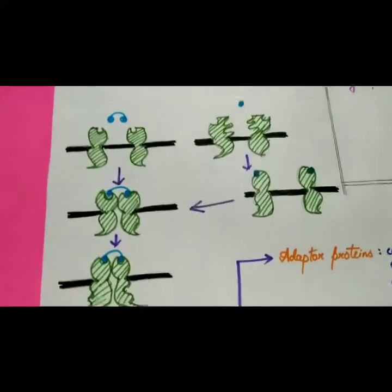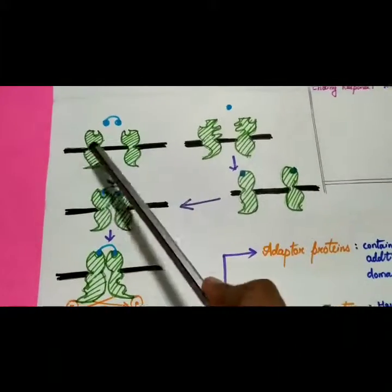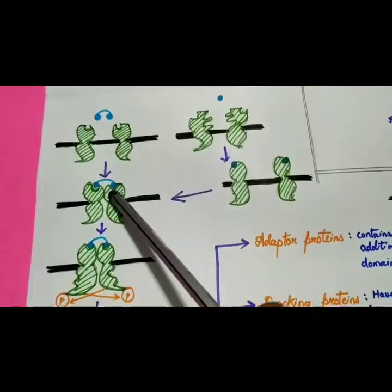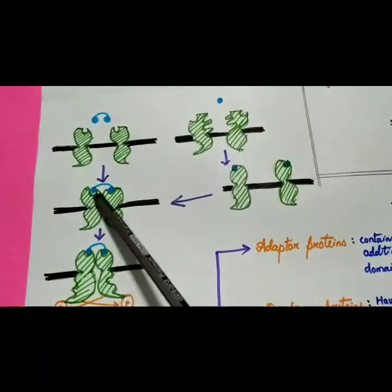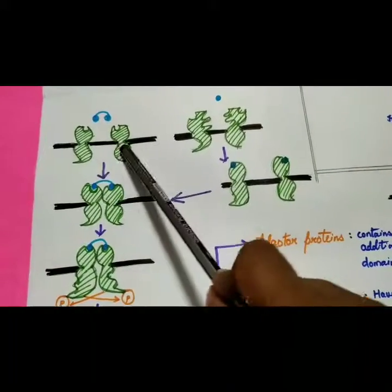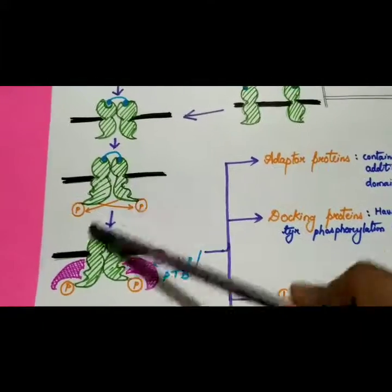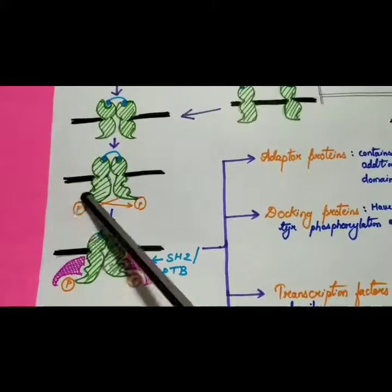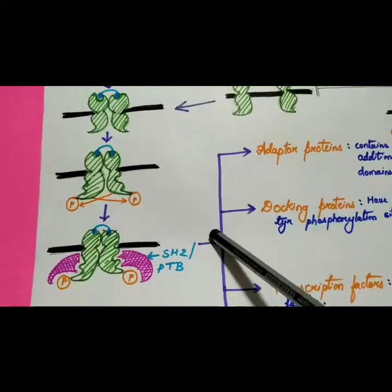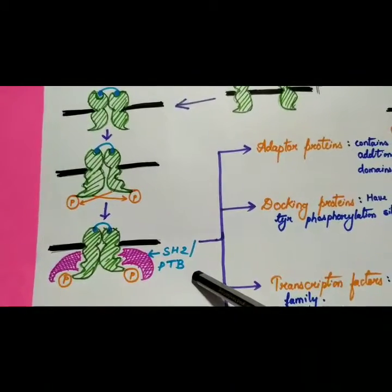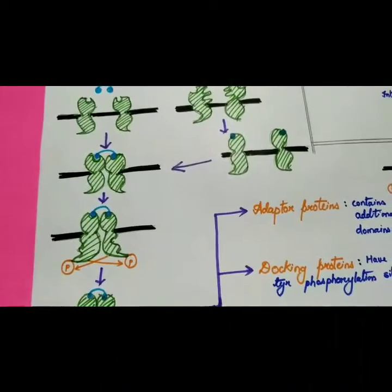Looking at the mechanism: in ligand-mediated dimerization, the ligand has two pockets that bind to two receptors, bringing them close together. Once bound, phosphorylation occurs — a phosphate group is added. This phosphorylation then recruits additional domains, either SH2 or PTB.